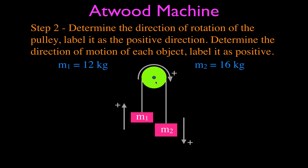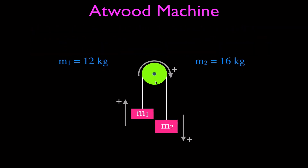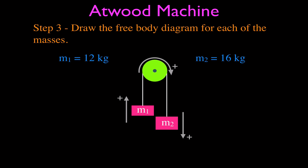We then draw the free body diagram for each mass, because we're applying Newton's second law and need to add up all the forces. Each mass has two forces: the gravitational force (Fg) and the tension in the cable (Ft). Make sure to designate them as Ft1 and Fg1 for mass one, and Ft2 and Fg2 for mass two. The tension pulls up and the force of gravity pulls down for both masses.